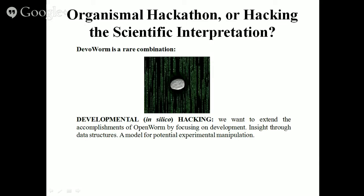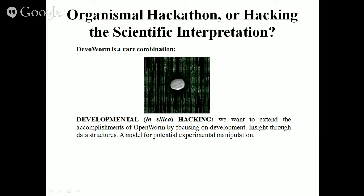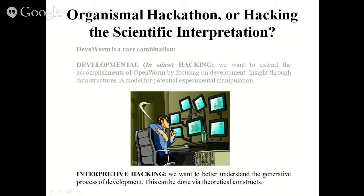We think of our efforts as a hackathon. This project is a rare combination: we're trying to hack development in a computing environment, in silico. We want to extend the accomplishments of Open Worm by focusing on development — where that adult phenotype comes from. But we're also doing interpretive hacking, getting a better idea of the generative processes of development, the possibilities of development. This can be done through the theoretical literature, appealing to theoretical concepts, and incorporating them into this project.